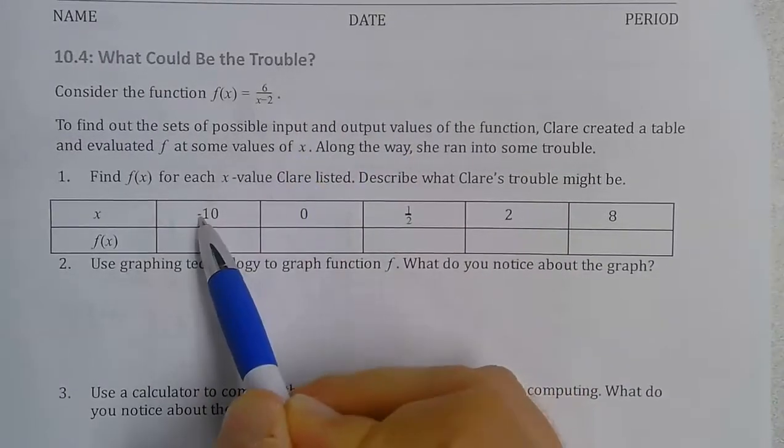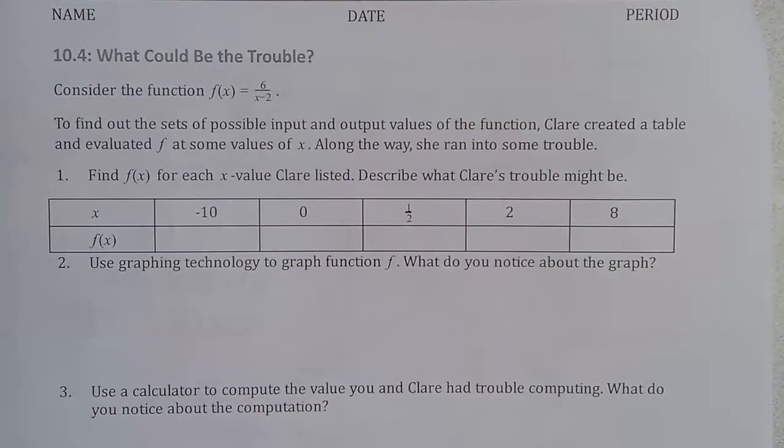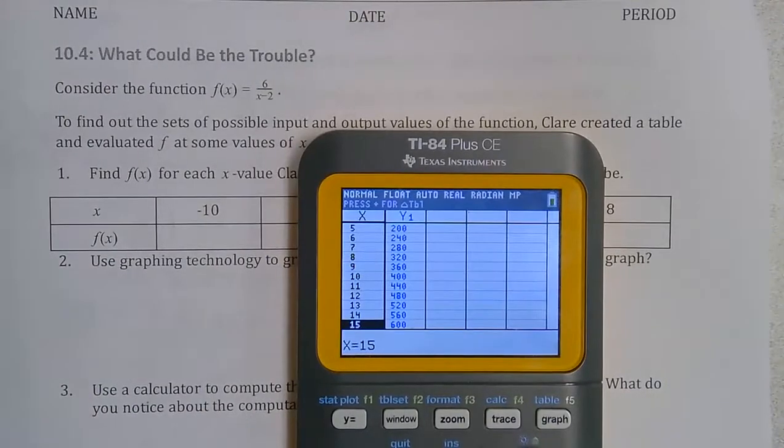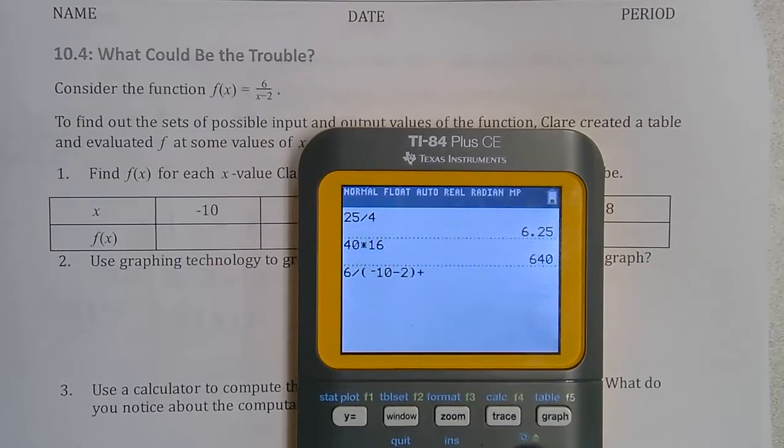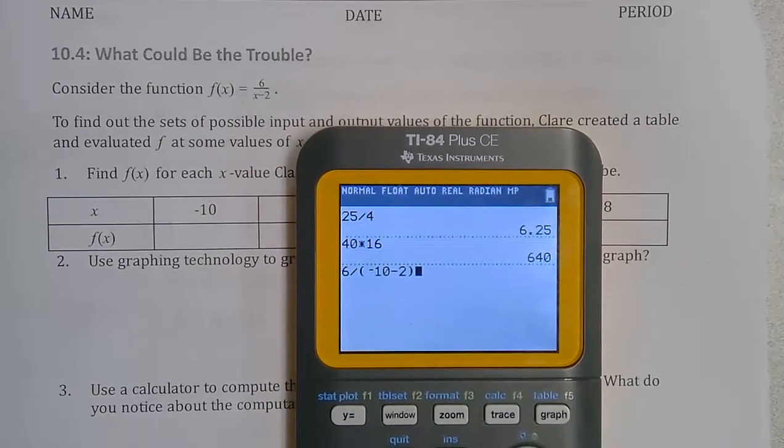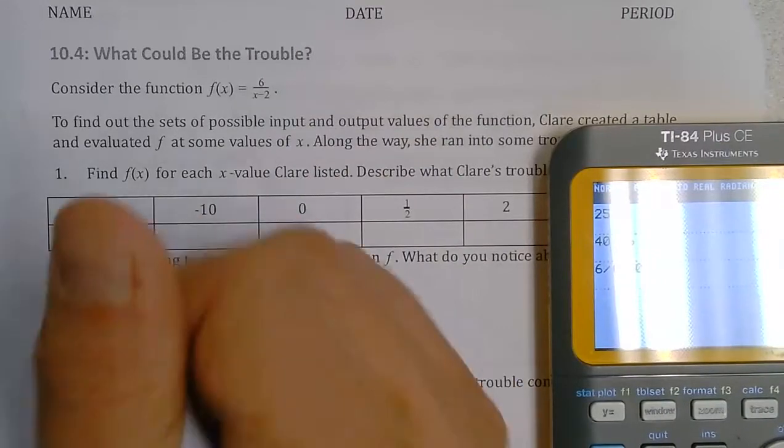So if I do 6 divided by negative 10 minus 2, that would be 6 divided by... And I can just put in here, in parentheses, negative 10 minus 2. And that would give me negative 0.5.